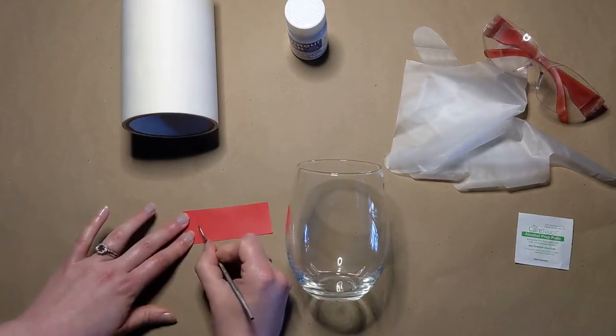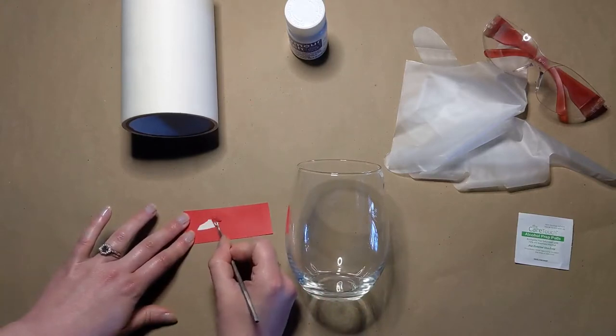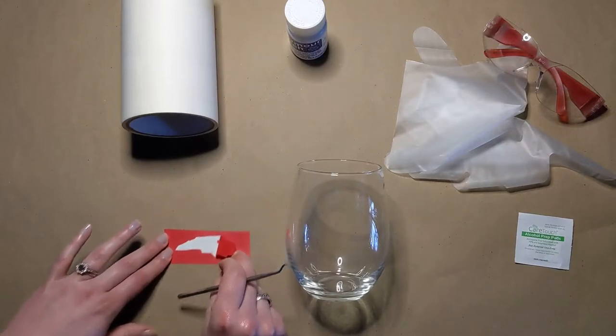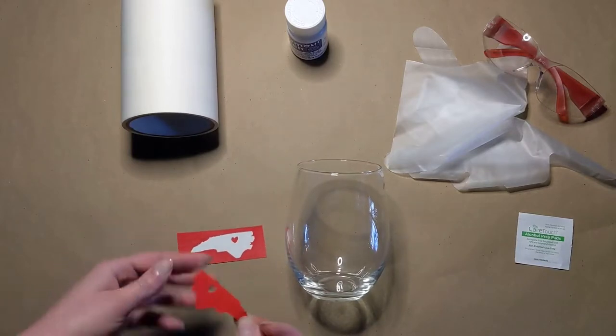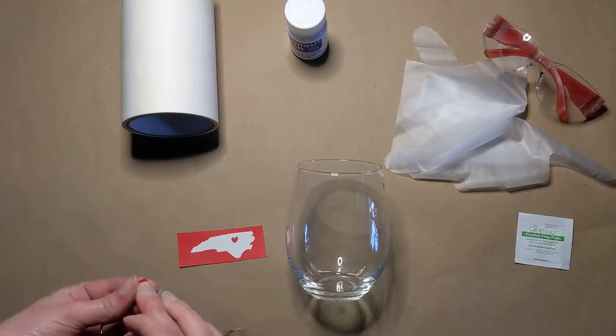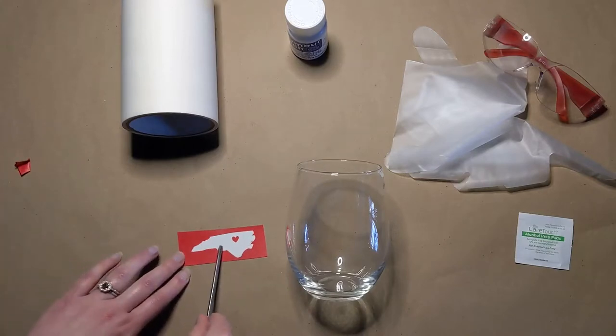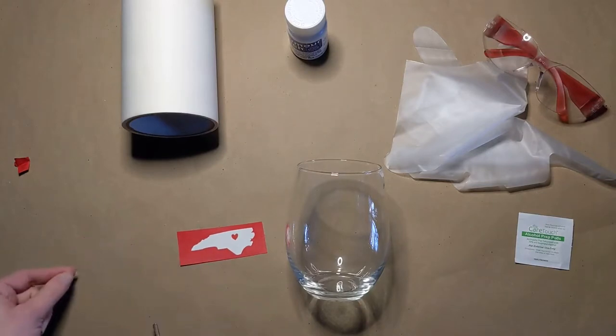Just take out the inside of the stencil. Pretty much I tell my customers that anywhere where you see the backing of the stencil, that's what's going to end up etched, and I feel like that's a good rule of thumb to just keep in account.